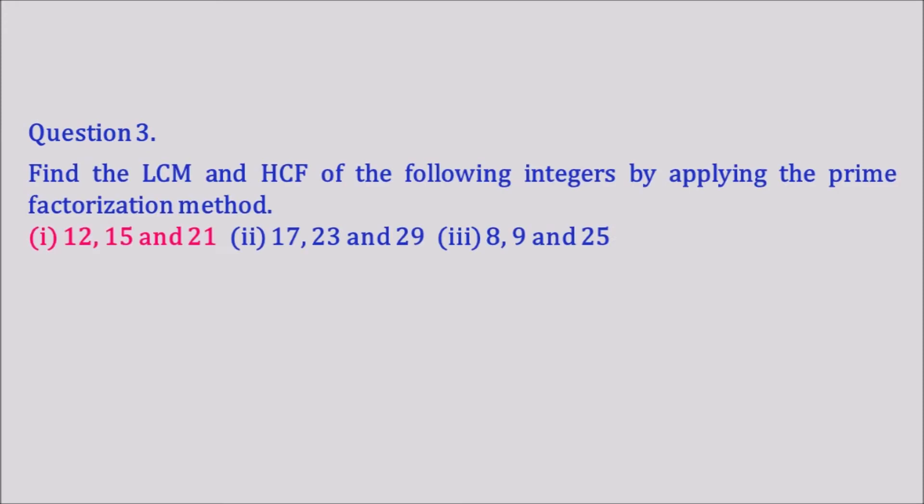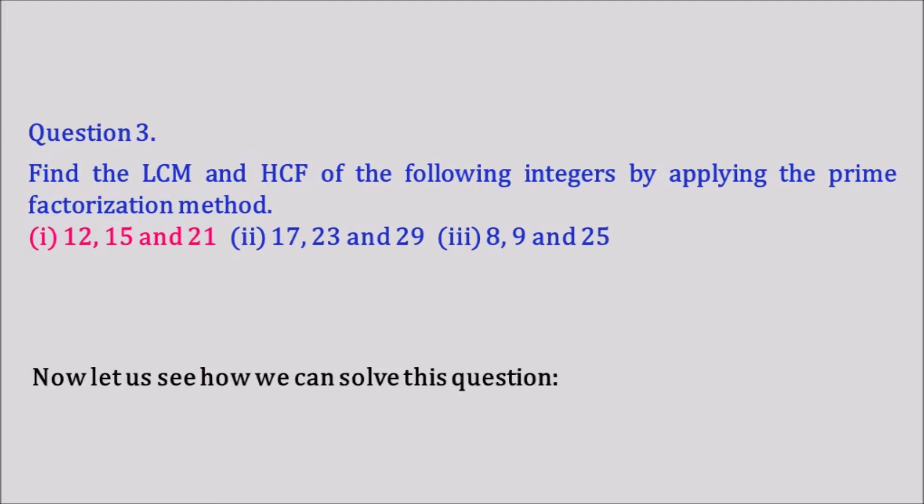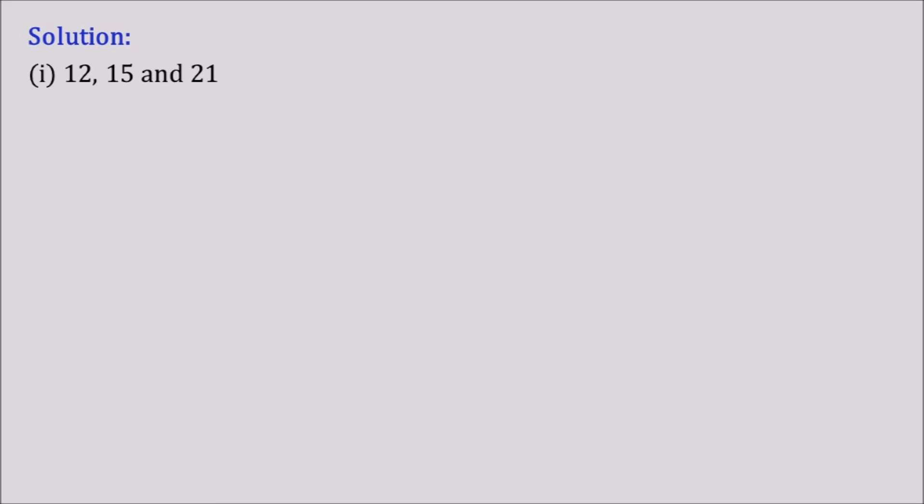Question number 3 says: find the LCM and HCF of the following integers by applying the prime factorization method. We need to find the LCM and HCF using the prime factorization method, and the given numbers are 12, 15, and 21.